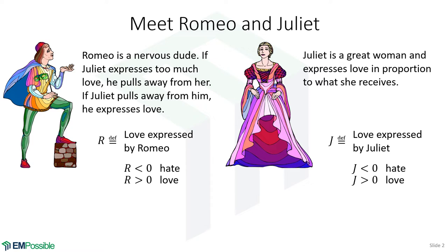We can define this mathematically. Let's define a function R that measures how much love Romeo has for Juliet and how much he's expressing that love. So if R is greater than zero, he's pouring on lots of love to Juliet. If it's less than zero, he hates Juliet and he's not treating her so well. And basically the same thing for Juliet — let's define a function J for how much she loves Romeo and how much love she is expressing to him. If J is greater than zero, she loves Romeo; if it's less, she hates Romeo and is treating him pretty poorly.